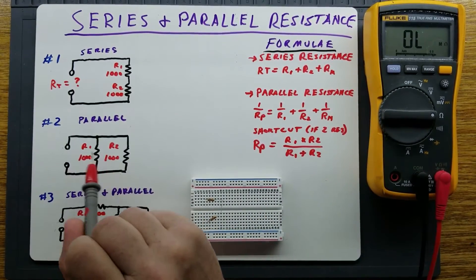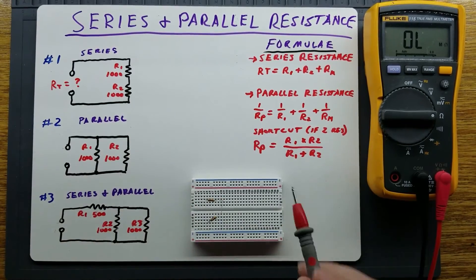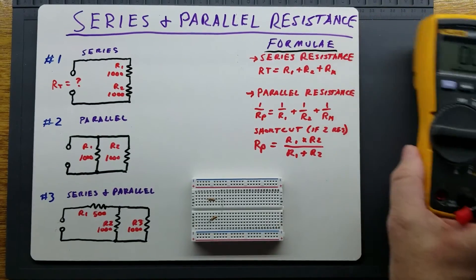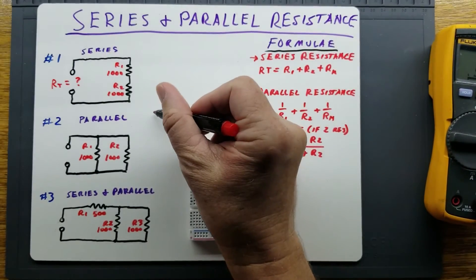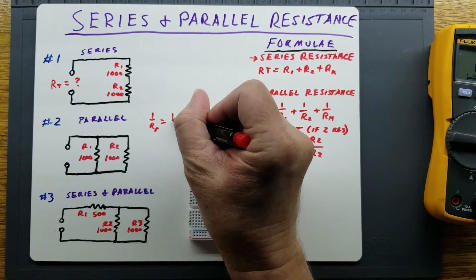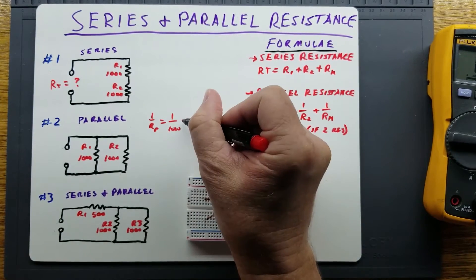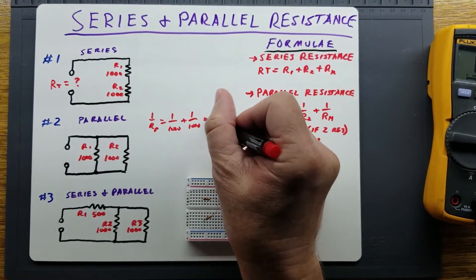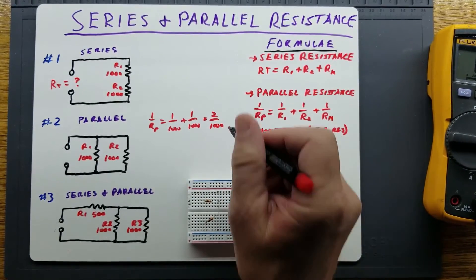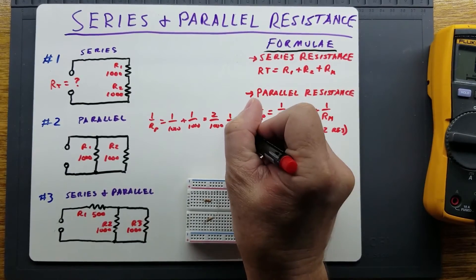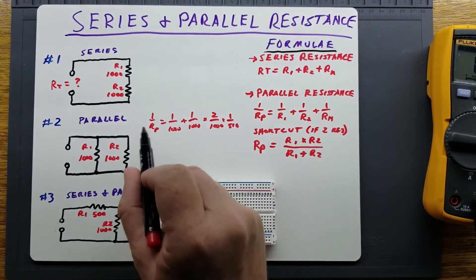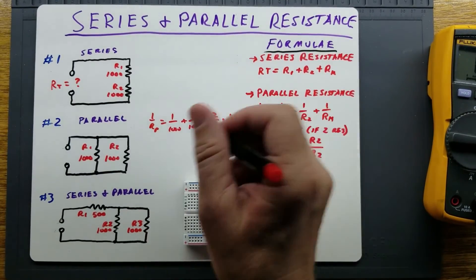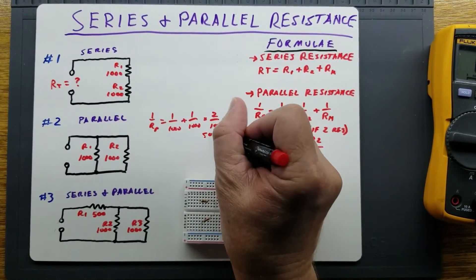Next case: two 1,000-ohm resistors in parallel. Calculating the long way: 1 over Rp equals 1 over 1,000 plus 1 over 1,000, which equals 2 over 1,000, or 1 over 500. The reciprocal of that is 500, so Rp is equal to 500 ohms.